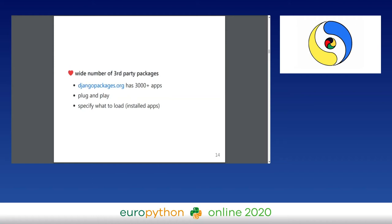Django has a really wide range of packages. For example, djangopackages.org is an unofficial package repository that currently has more than 3,000 apps — people share parts of their applications which you can just pull in and start using. The modules are plug and play: you specify it and it basically just works.